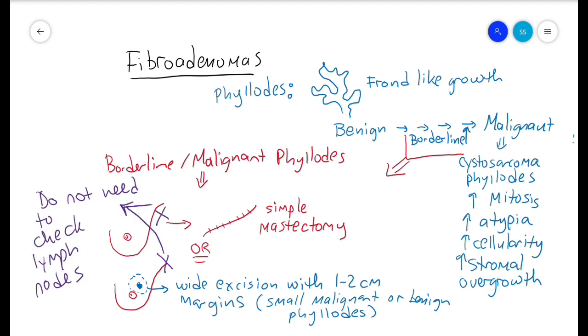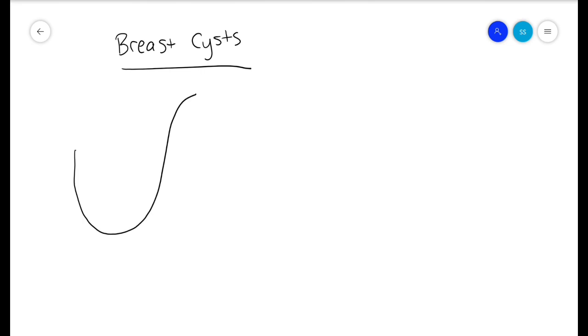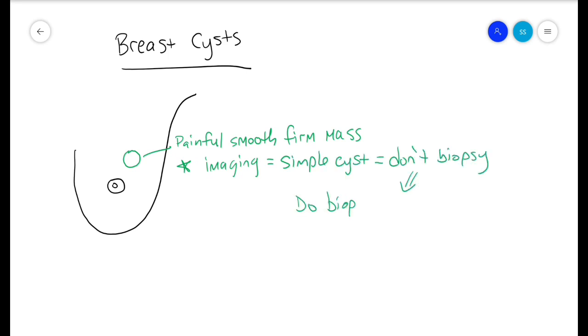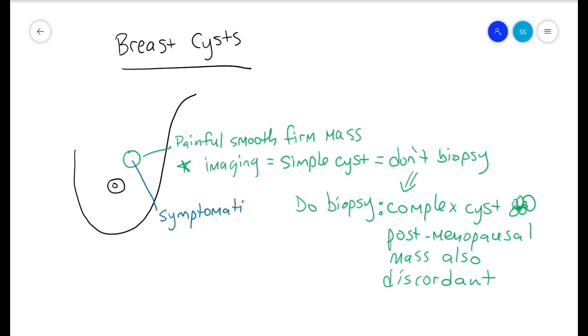A benign phyllodes can have a lumpectomy aiming for one to two centimeter margins. Lymph nodes do not need to be checked. Malignant phyllodes should have consideration for post-surgery radiation. Breast cysts present as painful, smooth, firm masses. They should generally not be biopsied if they look like simple cysts on imaging. Biopsy if it is a complex cyst in a post-menopausal woman, associated with a mass, or discordant with imaging. If none of these but the woman is symptomatic from this cyst, then it's okay to aspirate. If the aspiration is straw-colored fluid, do nothing. If the aspiration is bloody, then send cytology. If it's bloody fluid, also do a core needle biopsy of the cyst wall.